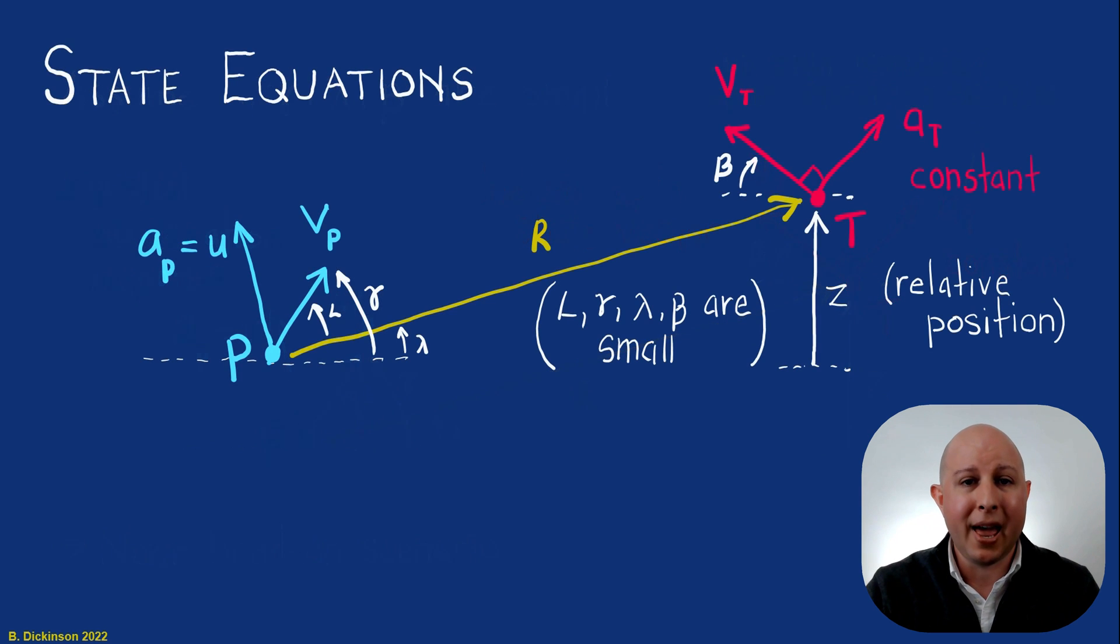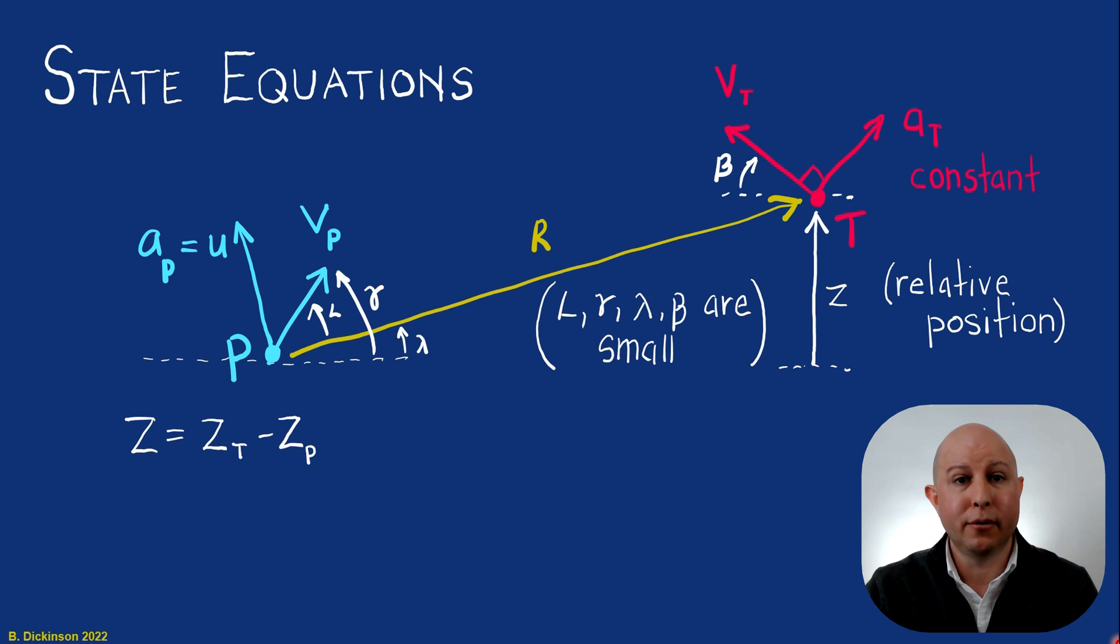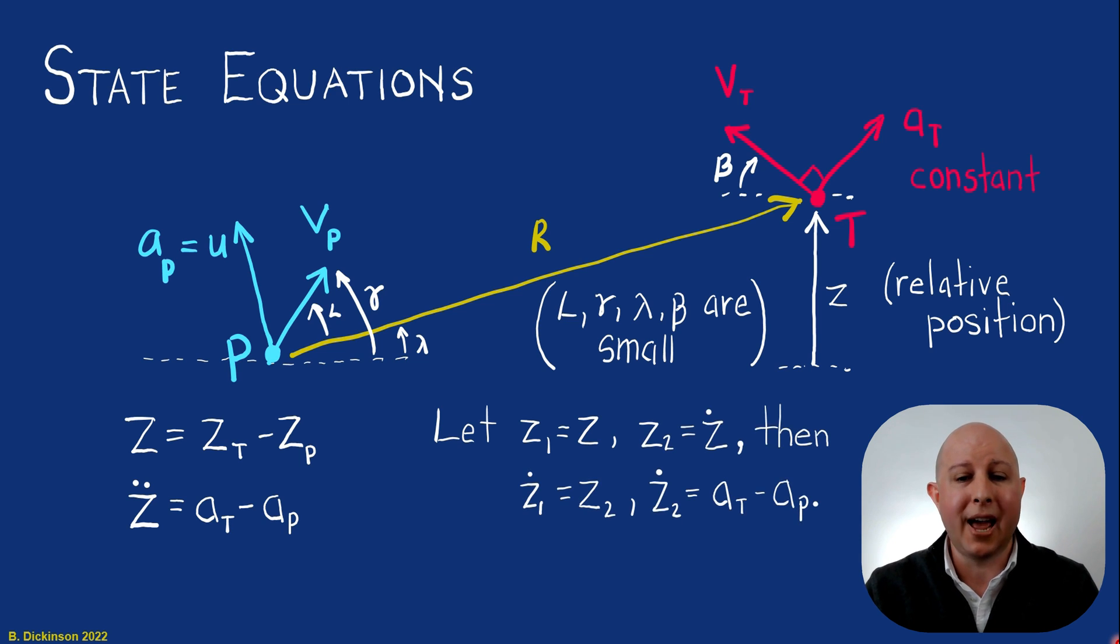So we're going to derive our kinematics to contain that acceleration. So let's go back to those kinematics. There's Z, relative position. Two derivatives means target acceleration minus pursuer acceleration. So now we're going to let Z1 equal Z, Z2 equal Z dot. We're going to break this up into a set of first order differential equations. This is all the same as last time. But now we're keeping that AT term. In fact, we're going to define a new state variable Z3 and we're going to call Z3 AT so that Z3 dot is just zero. AT is constant.